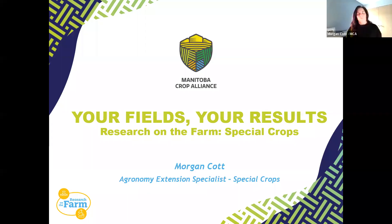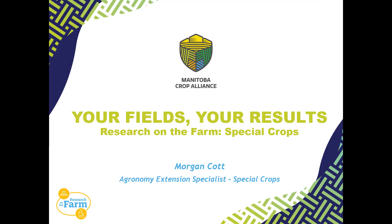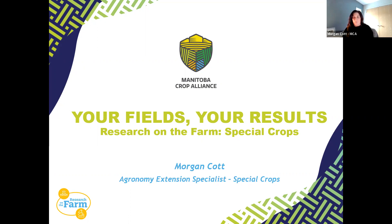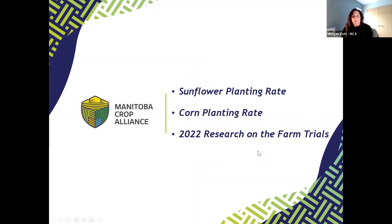We are approaching 11 o'clock but I hope you'll all stick with us as we welcome Morgan Cotton, agronomy extension specialist for special crops with MCA. Thanks Mallory — I'm Morgan Cotton, the agronomy extension specialist for special crops with MCA. I'll be discussing our results for research on-the-farm trials with our special crops, which include sunflower planting rate (first year of data collection last year), and we continued with corn planting rate trials for year two in 2021. I'll also give a little wrap-up on what MCA has planned for research on-the-farm trials in 2022.